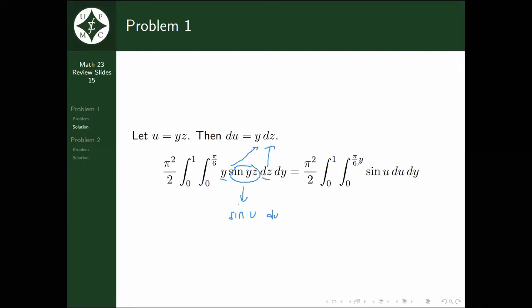We also have to change the boundaries. When z equals 0, u is also equal to 0. But when z equals π/6, u equals y times π/6, or πy/6.